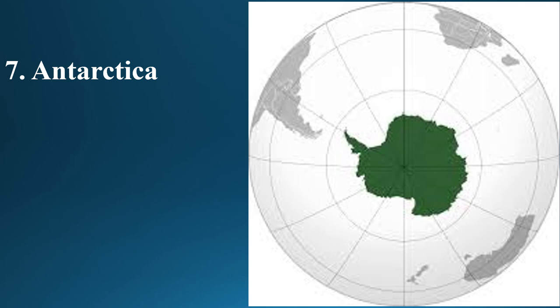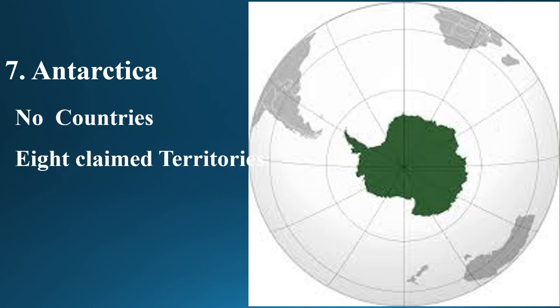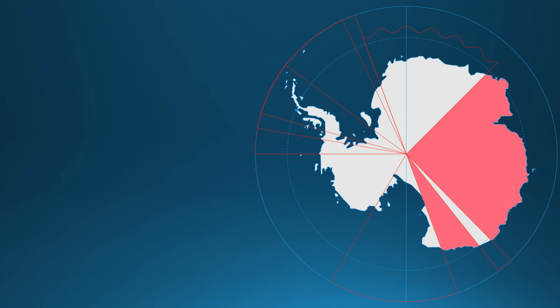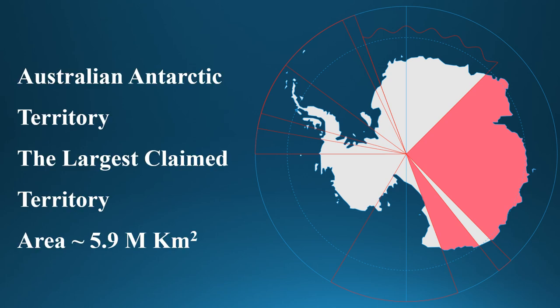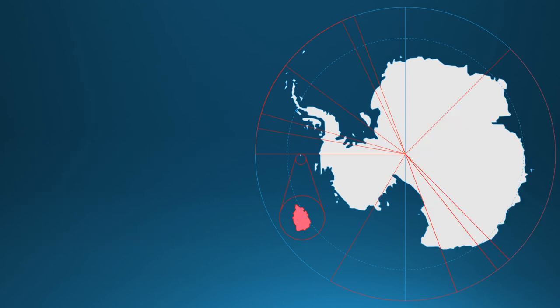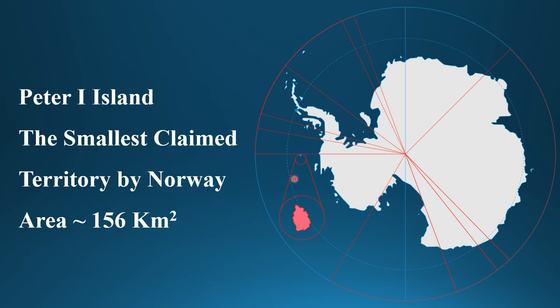Antarctica is found at the South Pole and has no countries. However, there are 8 claimed territories. Its total area is 13.7 million square kilometers, making it the fifth largest continent in the world. The largest claimed territory in Antarctica is the Australian Antarctic Territory, with a total area of 5.9 million square kilometers. The smallest claimed territory is Peter I Island, with an area of 156 square kilometers.